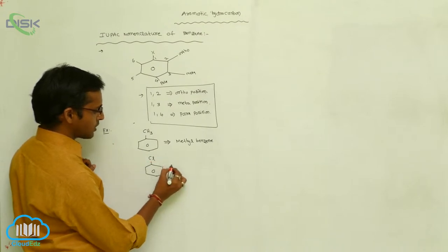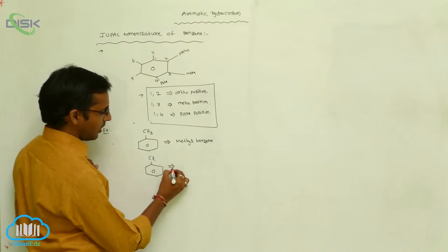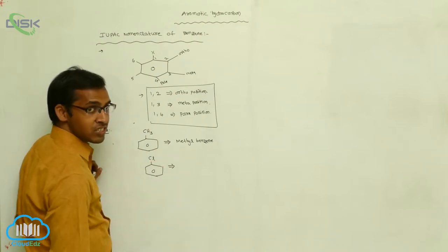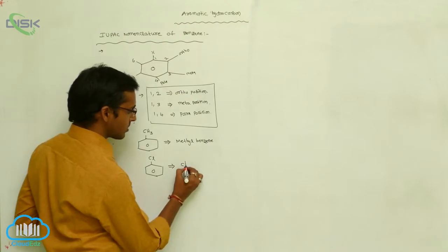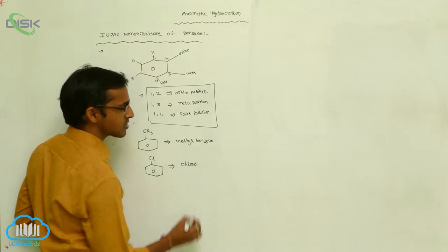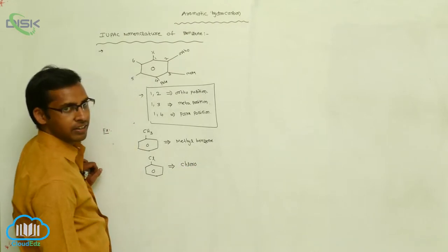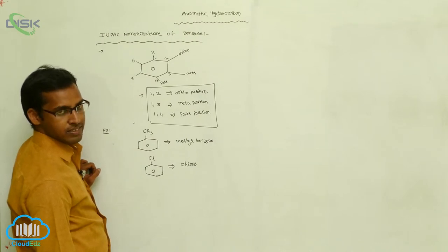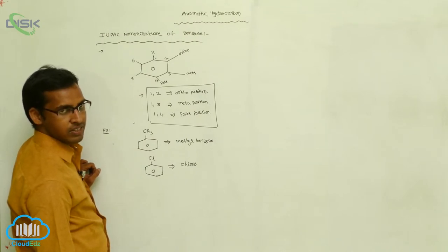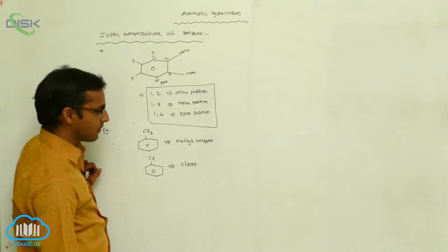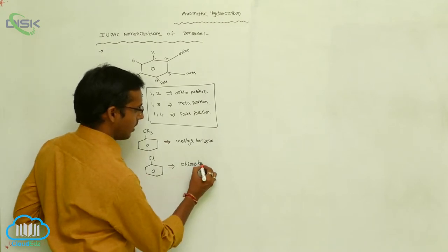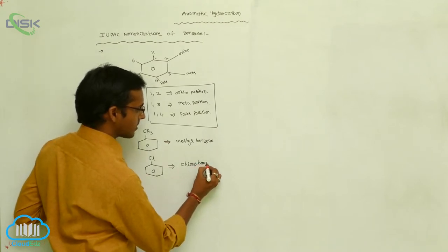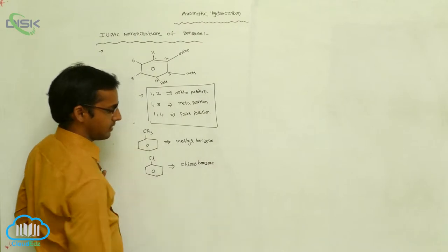If chlorine is present as your substituent, the secondary prefix is chloro — not suffix, secondary prefix is chloro — and the suffix is benzene. So the name is chlorobenzene.